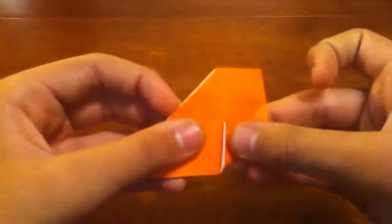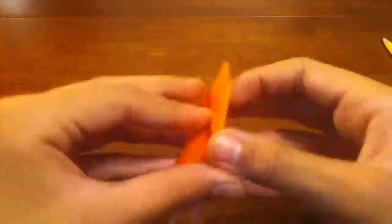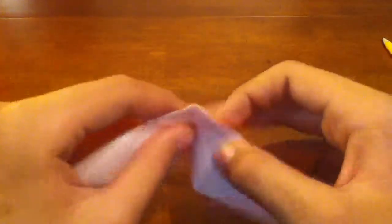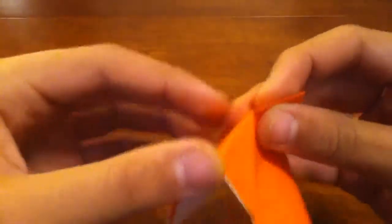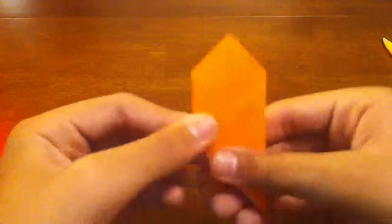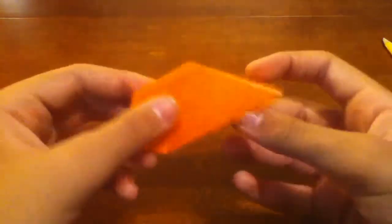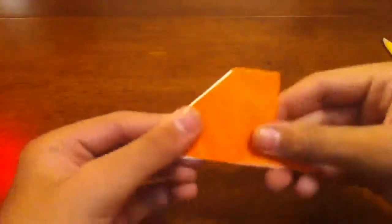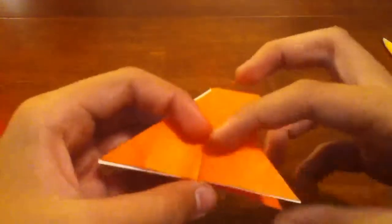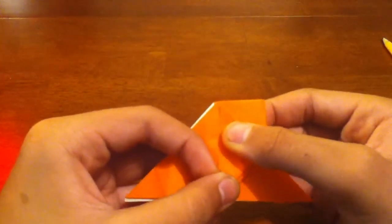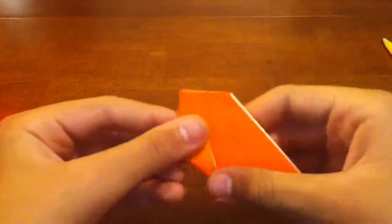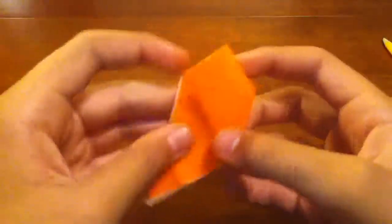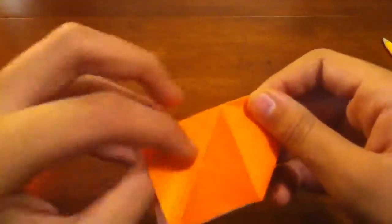Fold this corner along this line and then inside reverse fold it. Just like that. Fold the flaps back. Then going to outside reverse fold these two flaps like this. And then just like this.